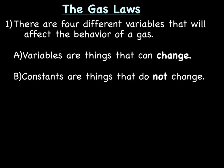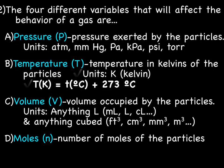Let's start with a quick overview of the gas laws and a few terms you need to know. There are four variables that will affect the behavior of a gas. A variable is something that can change, and a constant is something that does not change. We're going to go through all four variables right now, although today we're actually going to only focus on two of these.